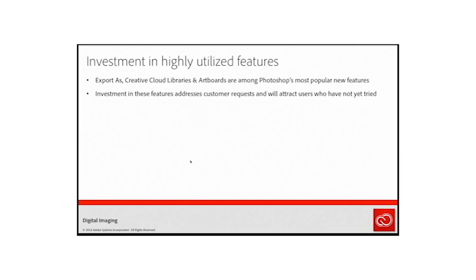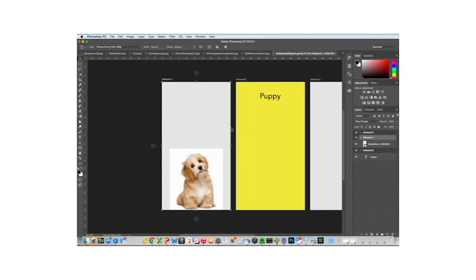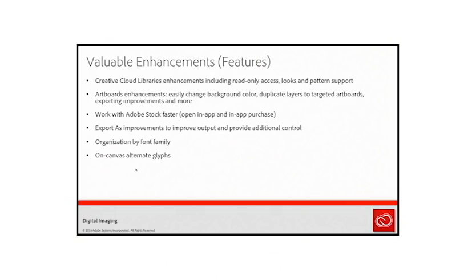There are also updates to export as, Creative Cloud libraries, and art boards. In art boards, if you copy something from one board to another, it places it in exactly the same spot in the new art board. There are also improvements in Adobe Stock — you can do in-app purchases and image searches right within Photoshop. Once a client approves a design using a preview image, you can license the full image and have it load in and replace the preview right there in Photoshop, without ever leaving the program.